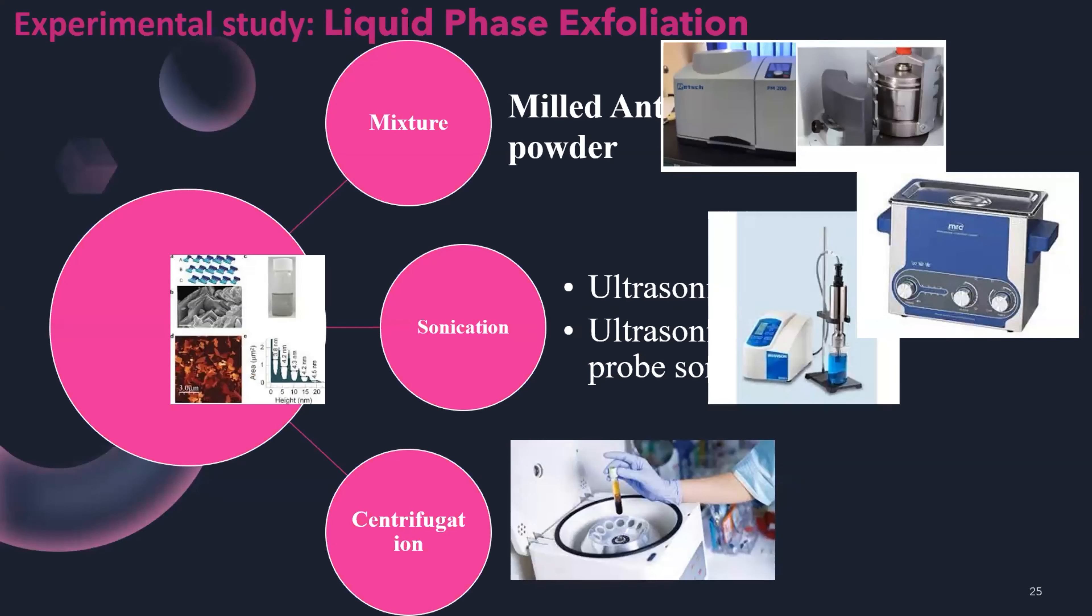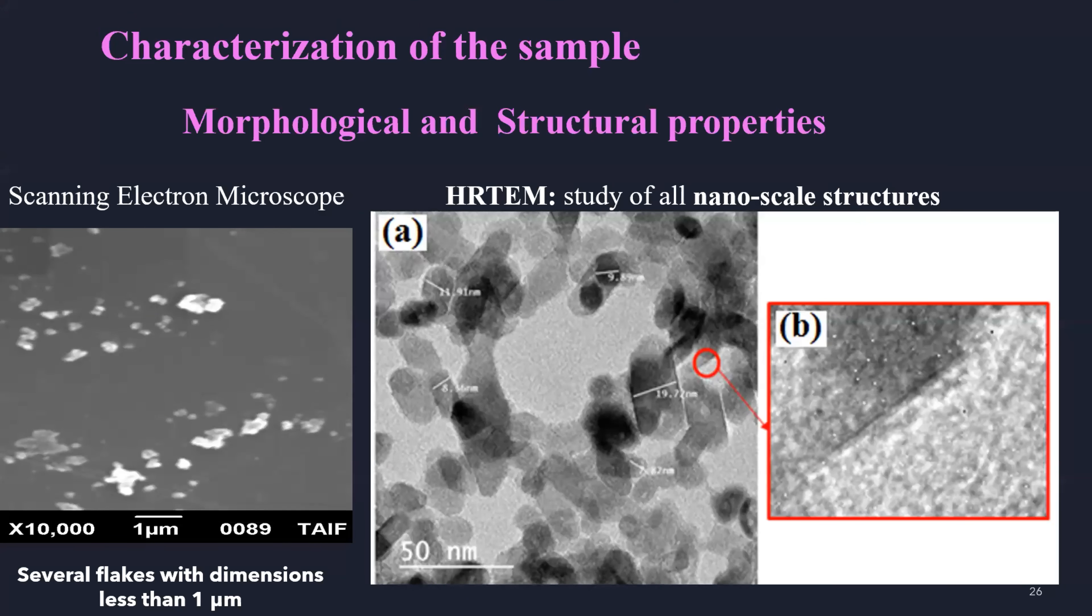The synthesis of antimony and different allotropes are also determined by using liquid phase exfoliation consisting in mixture of material and adequate solvent. After we use ultrasonication and centrifugation which is necessary to separate the exfoliated part from the non-exfoliated material.